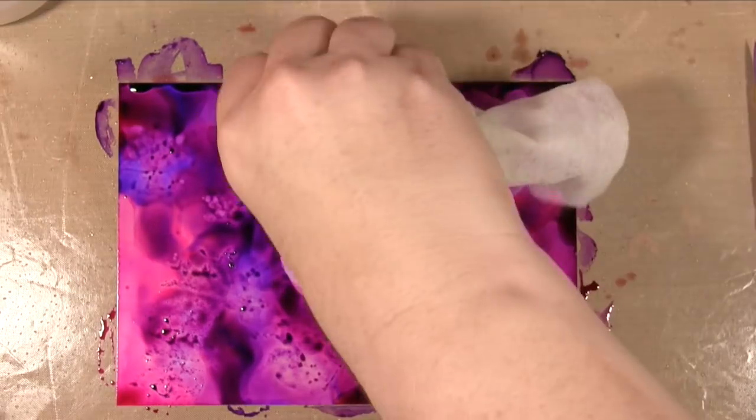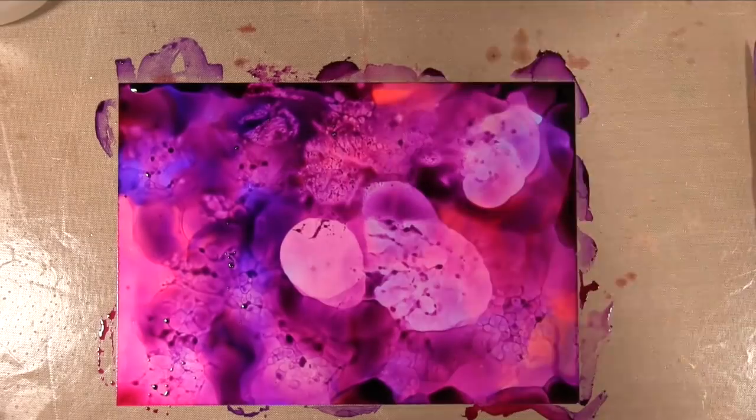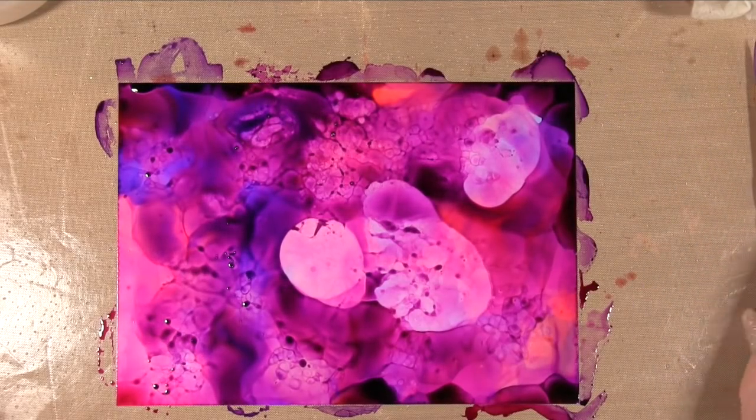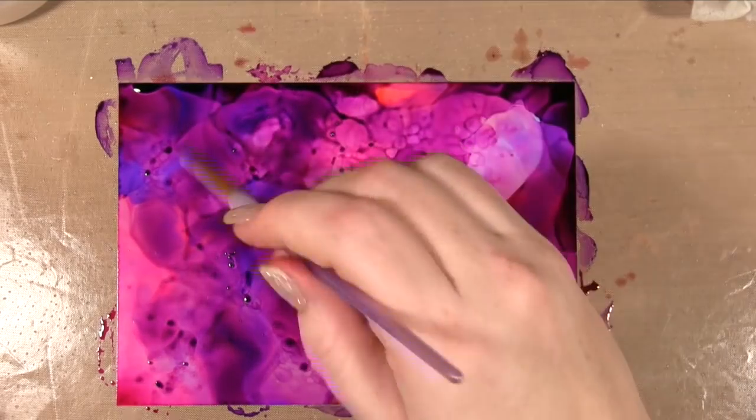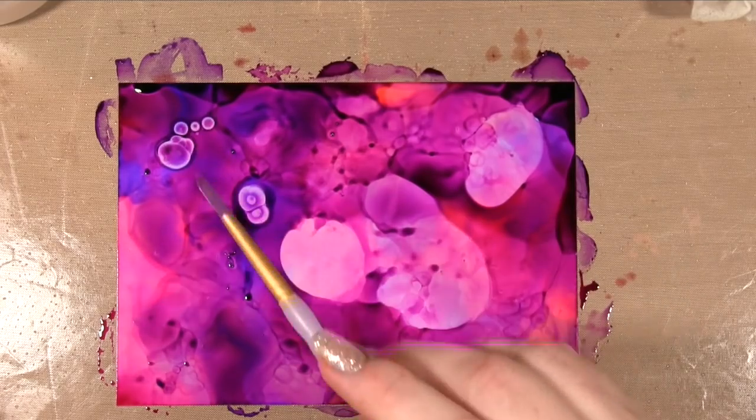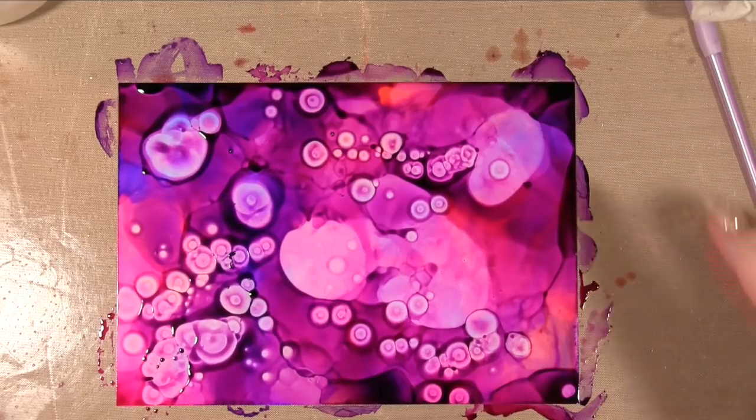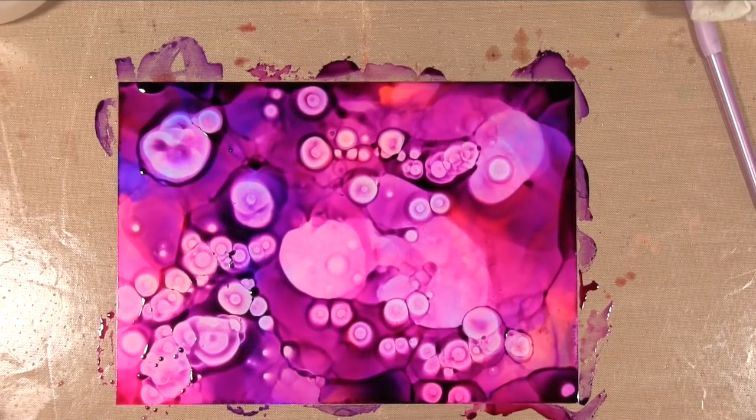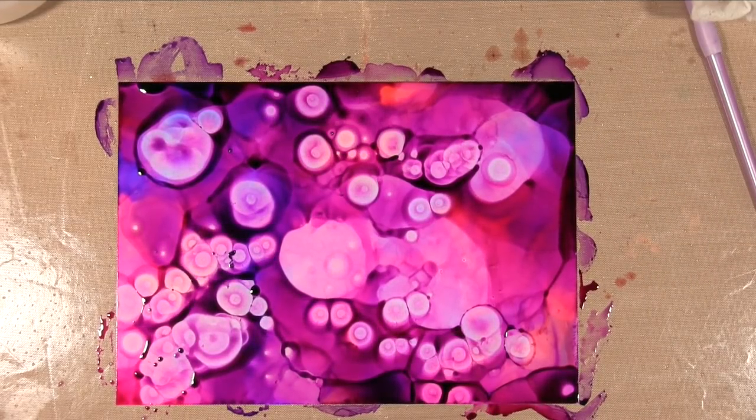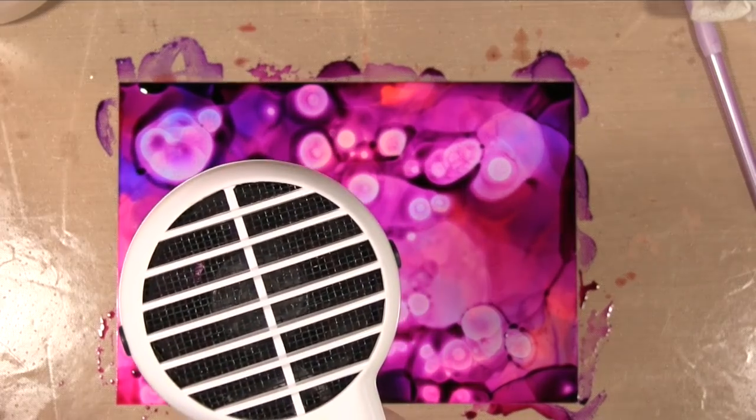I'm going to take a little baby wipe and just take some of the excess ink off so that when I next put some stuff down, it might separate in a different way because there's not quite so much puddles of ink on the Yupo paper.